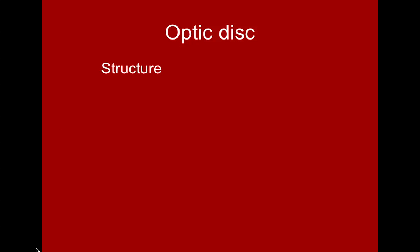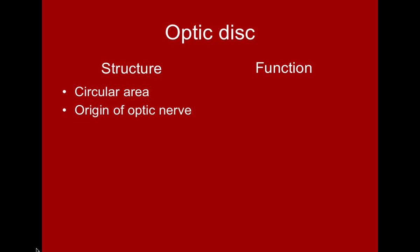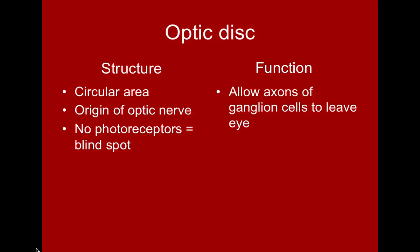The optic disc is a circular area at the back of the eye, which is the origin of the optic nerve. Unlike most of the inside of the eye, at the optic disc there are no photoreceptors, creating our blind spot. This allows the axons of the ganglion cells to leave the eye to form the optic nerve, and allows blood vessels to enter and exit the eye.